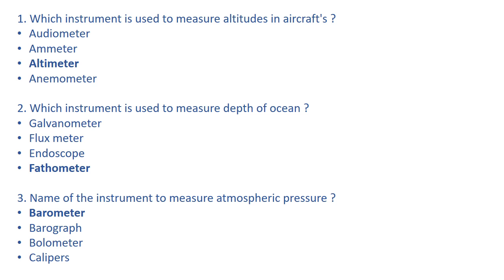Question number three: name the instrument used to measure atmospheric pressure. People always get confused between barometer and barograph. The right answer is barometer, which is used to measure atmospheric pressure. Barograph is an instrument used to record the atmospheric pressure — so don't get confused between measure and record.